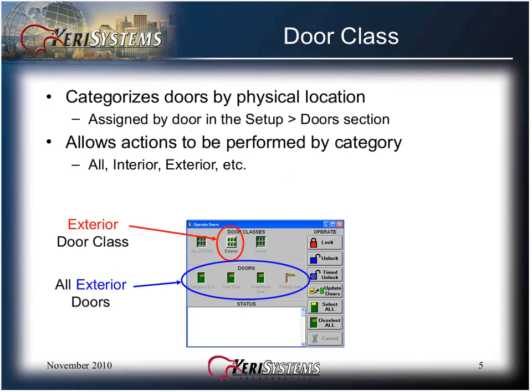Door class categorizes doors by physical location. They are assigned by door in the Setup Doors section. It allows actions to be performed by category — all doors, interior, exterior, etc. When a door class is selected, all the doors that are classed as exterior doors will appear in the doors section.